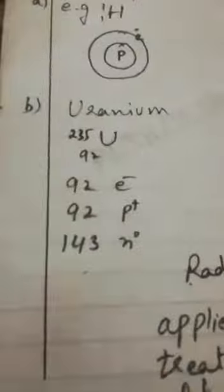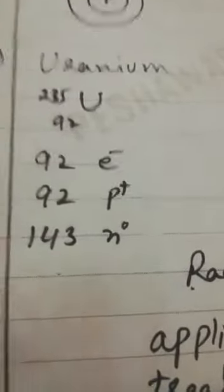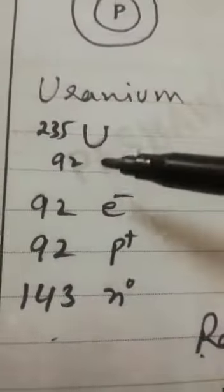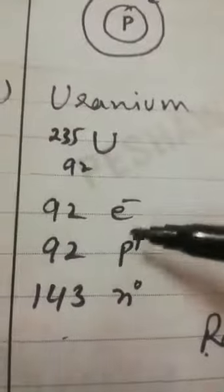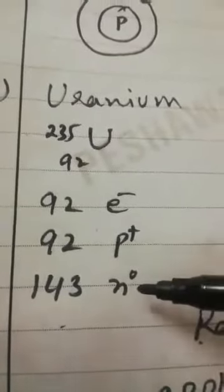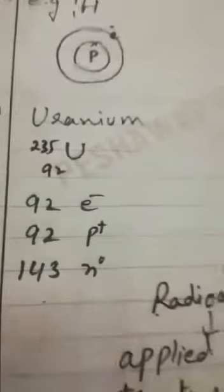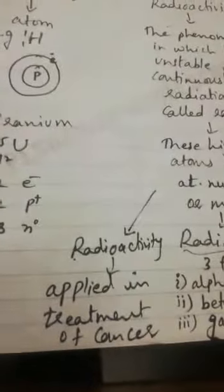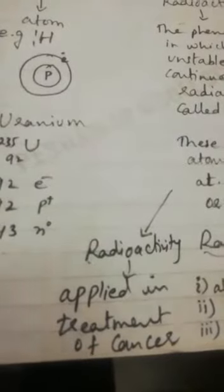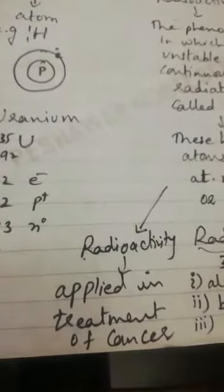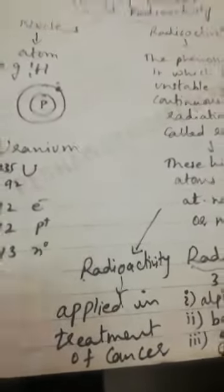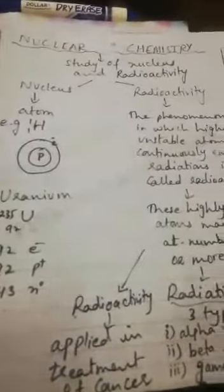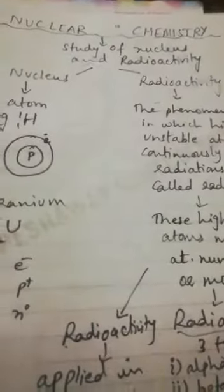If you look at the atom of uranium, it has 92 electrons, 92 protons, and 143 neutrons. Radioactivity has wide applications and is applied in the treatment of cancer as well as for the diagnosis of different types of diseases. So this study is called nuclear chemistry.